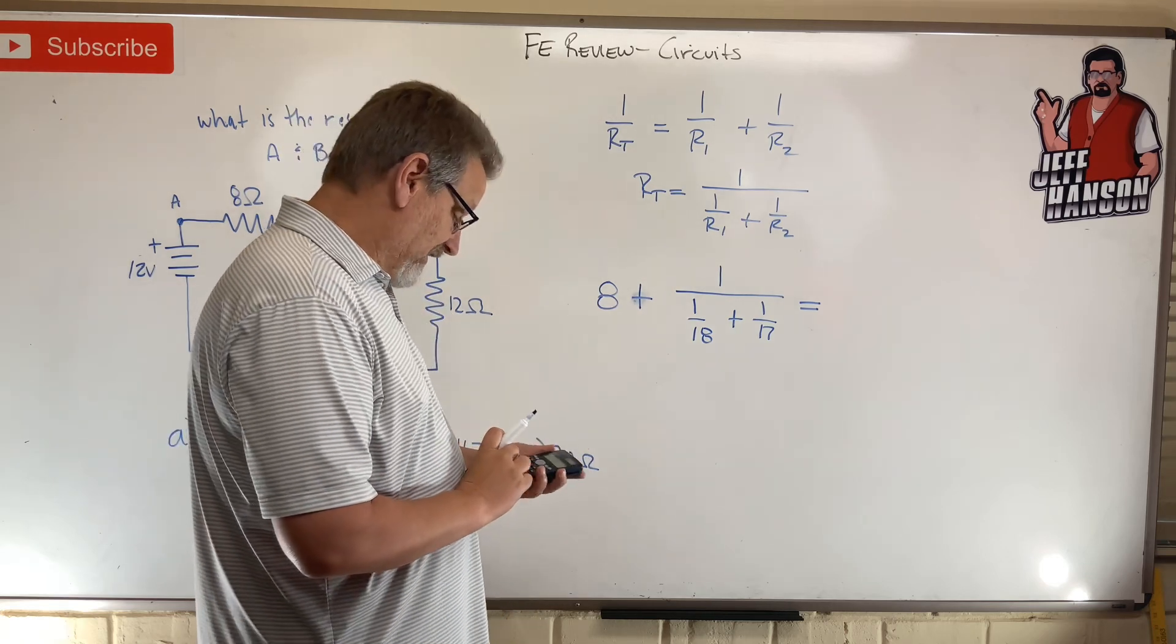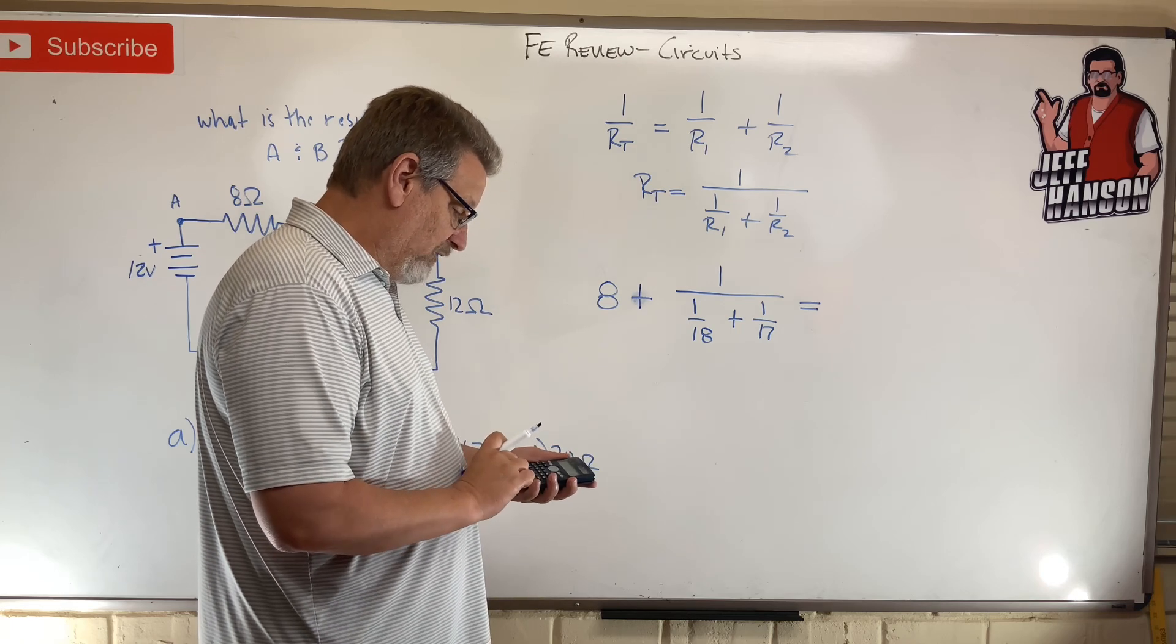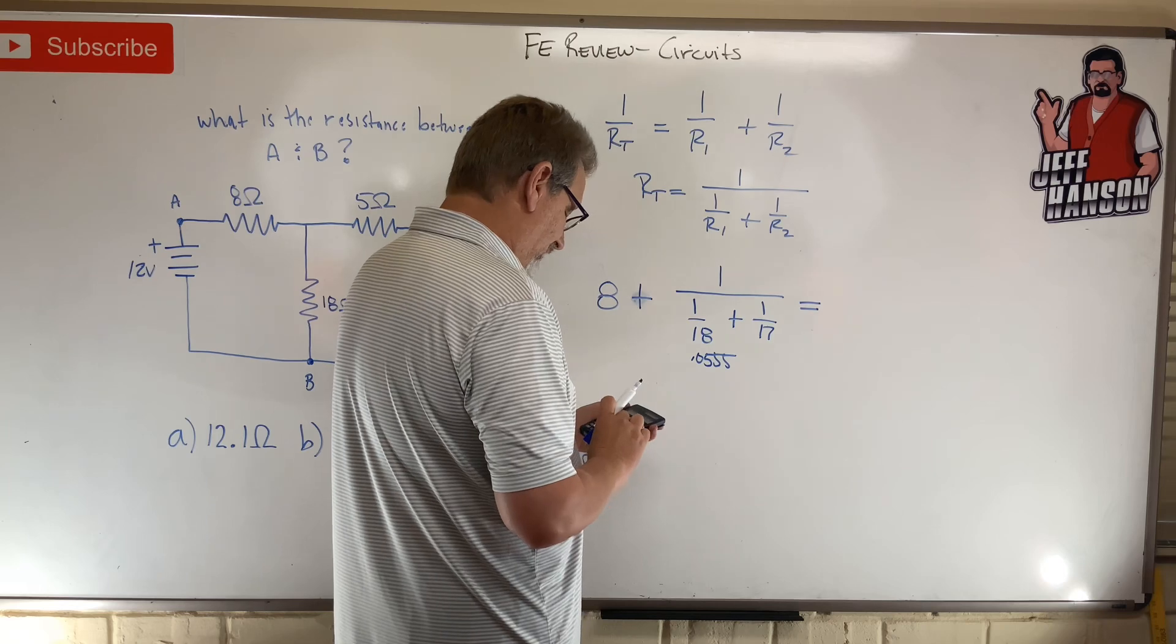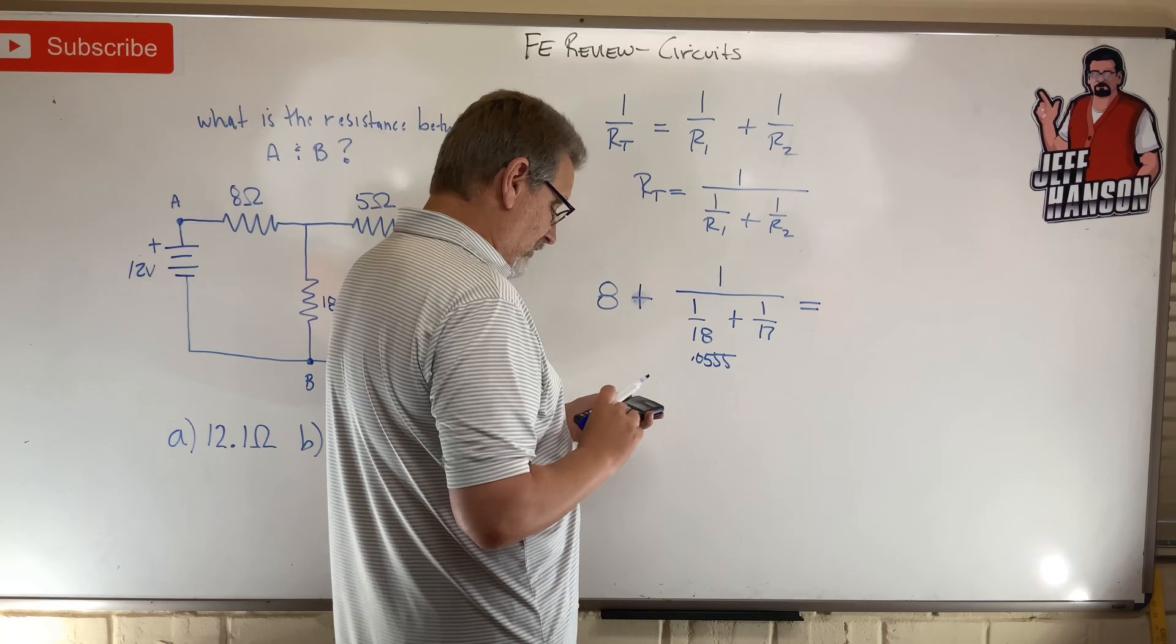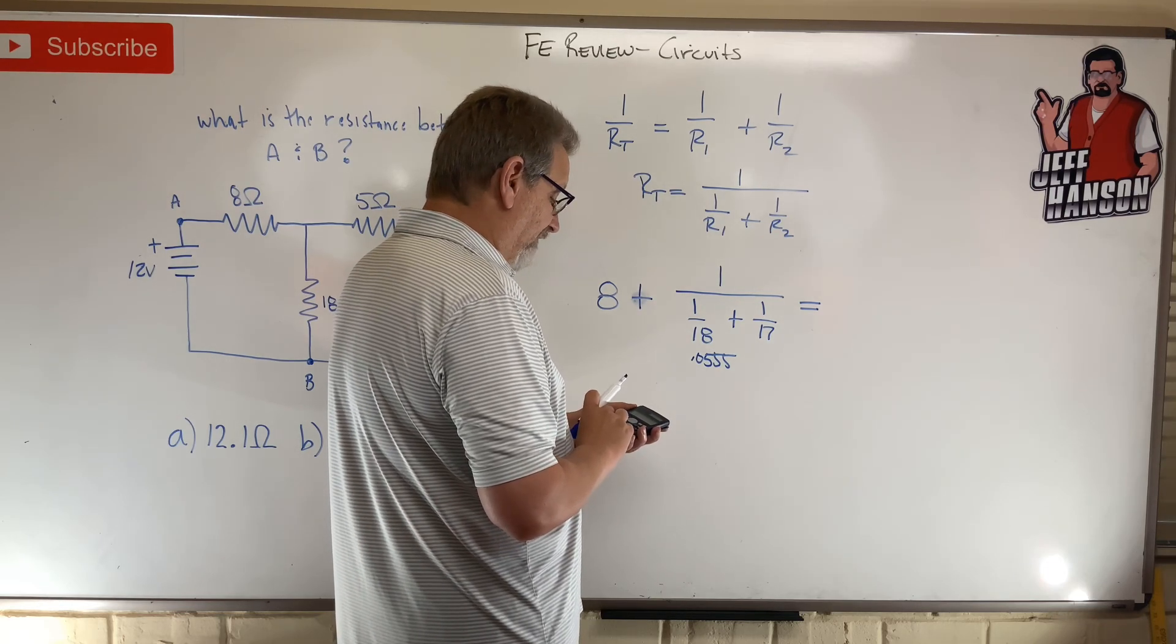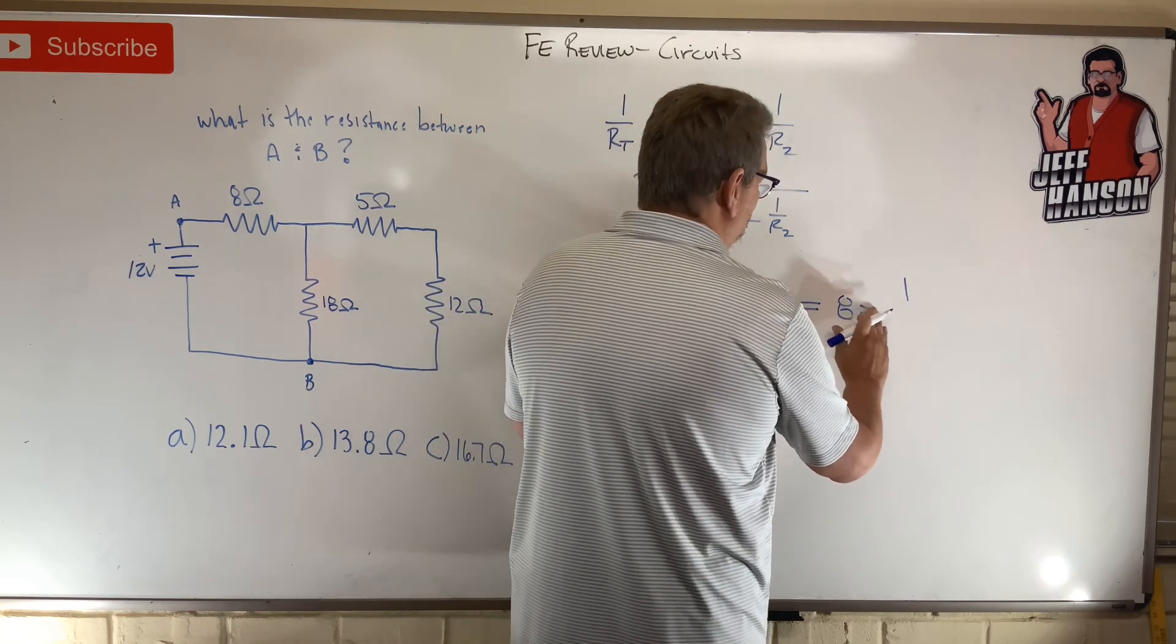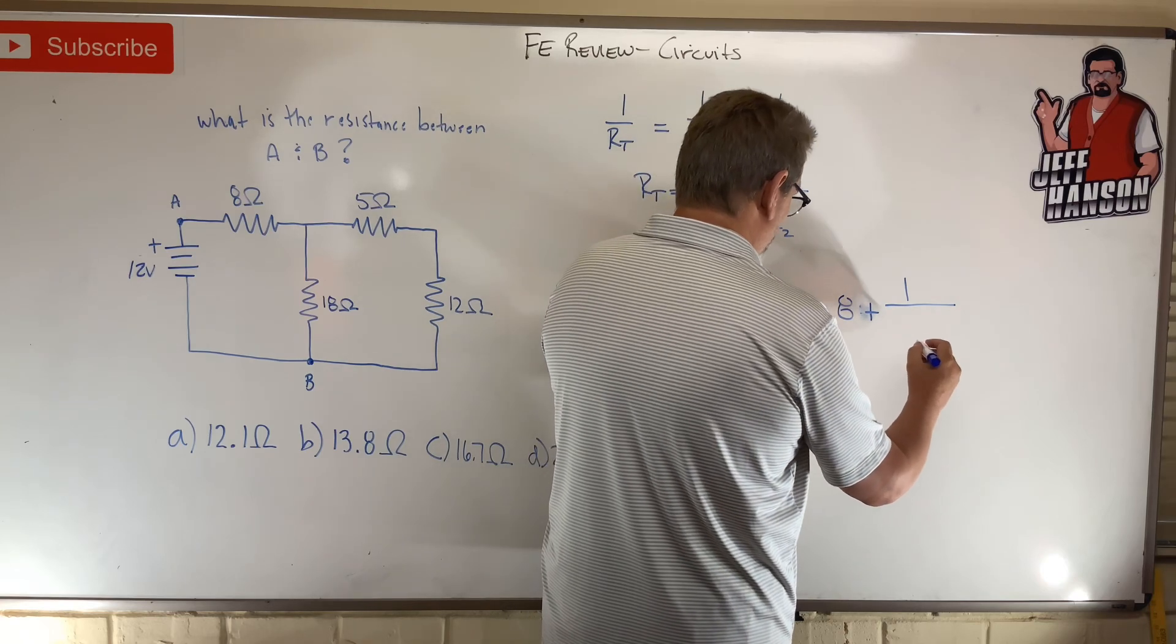That's how you do parallel. Let's see - one divided by 18 equals 0.0555, and one divided by 17 equals 0.0588. I'm going to add those: 0.0588 plus 0.0555 equals 0.11438. So we have 8 plus one divided by 0.11438.